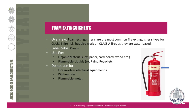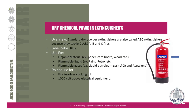Next are dry chemical powder extinguishers, also known as ABC extinguishers, which generally tackle Class A, B, and C fires — fires started with organic materials, flammable liquids, and flammable gases. They have a blue-colored label with 'Powder' written on it. These should not be used for fires involving cooking oil or electrical equipment rated at 1000 volts and above.